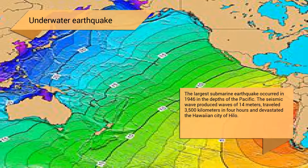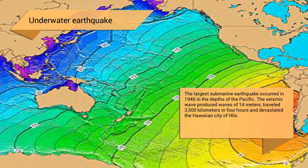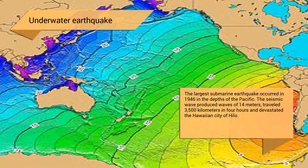The largest submarine earthquake occurred in 1946 in the depths of the Pacific. The seismic wave produced waves of 14 meters, traveled 3,500 kilometers in four hours, and devastated the Hawaiian city of Hilo.